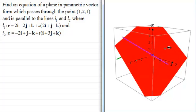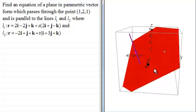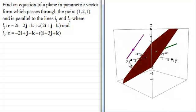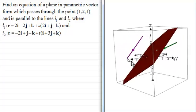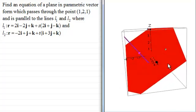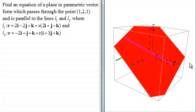like in this example I've got here, given by this point here, and it's parallel to two lines. If I rotate this, hopefully you can see that it's parallel to these two lines, which don't happen to be on the surface of the plane.